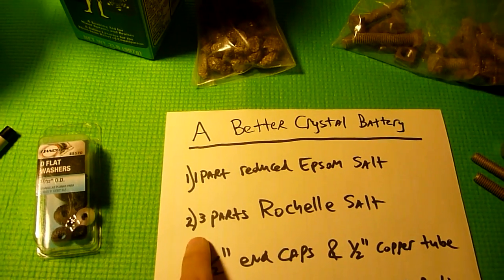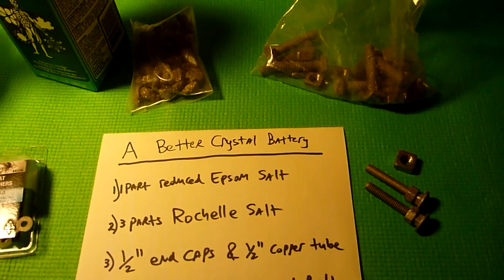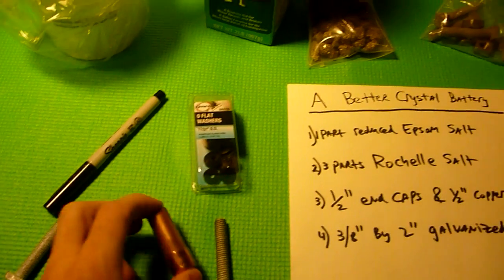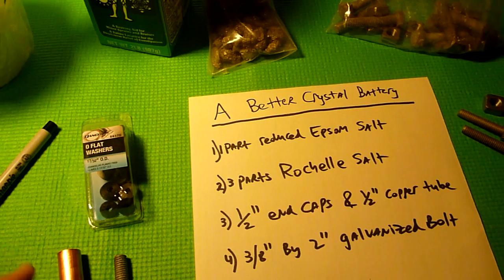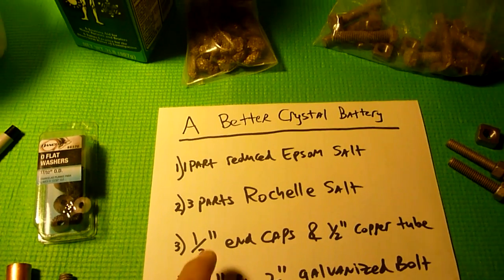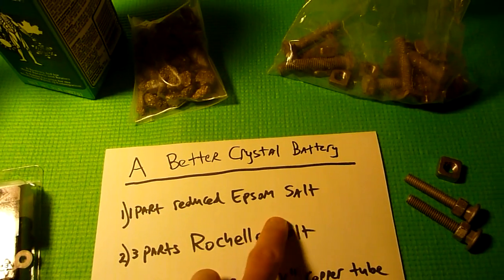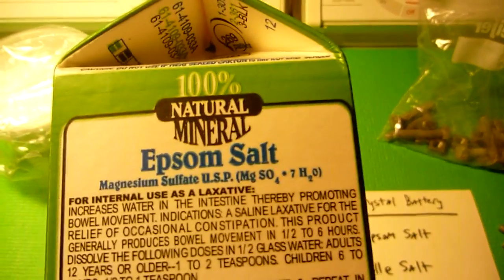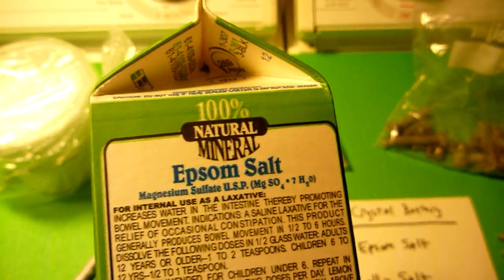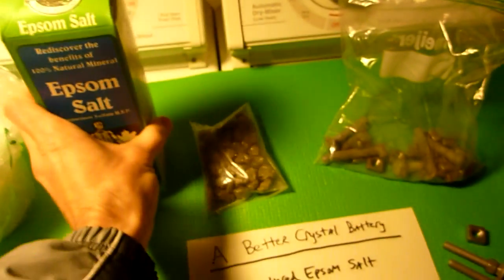We're going to try to replicate his battery using common materials that you can find at your local hardware store. The first thing you'll need is one part reduced epsom salt. Epsom salt is magnesium sulfate 7-H2O. We'll be boiling this to remove the 7-H2O out of it.